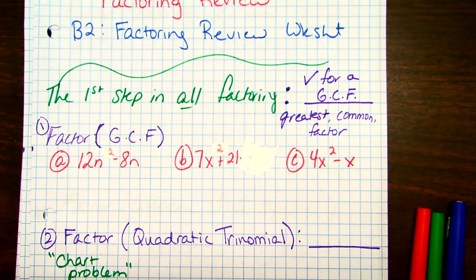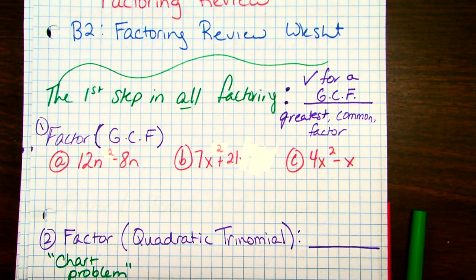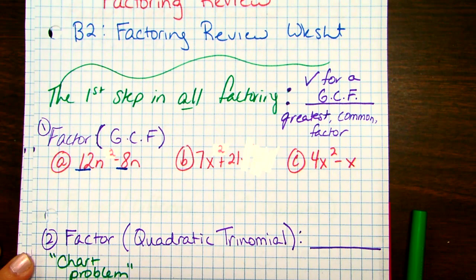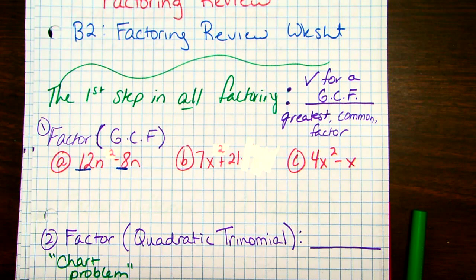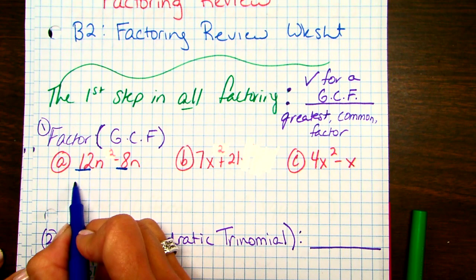The first type of problem we're going to have are just ones that have a GCF. You'll notice sometimes there's numbers, sometimes there's letters, sometimes there's both. So I want you to think of each of these problems as two separate pieces: numbers and letters. Let's start with numbers — looking at the 12 and the 8. What's the biggest number that they have in common that is a factor? Four. It has another common factor of two, but that's not the greatest common factor. The biggest number that goes into 12 and 8 is four.